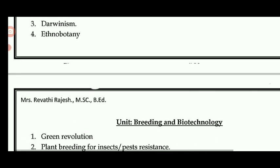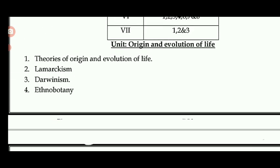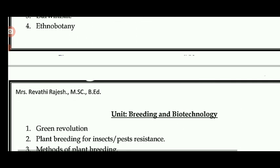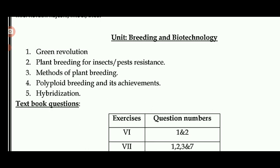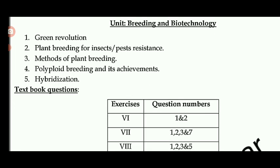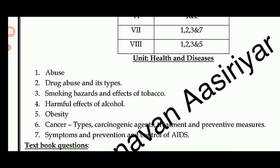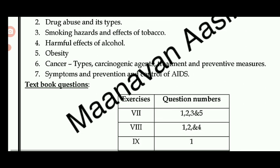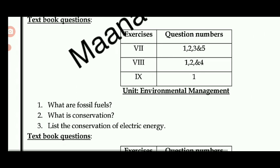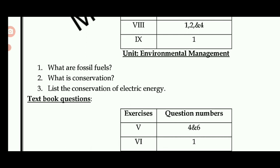For genetics, two questions are important. For breeding and biotechnology: green revolution, plant breeding for insect-pest resistant crops, methods of plant breeding, polyploidy breeding and its achievements, and hybridization. Also important: tobacco, alcohol, obesity, and cancer — including carcinogenic agents, treatment, prevention, symptoms, and control of AIDS.